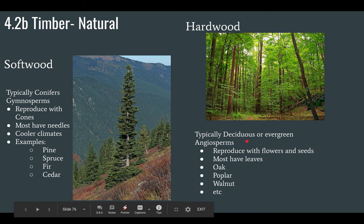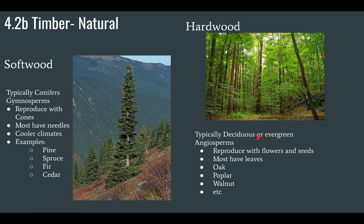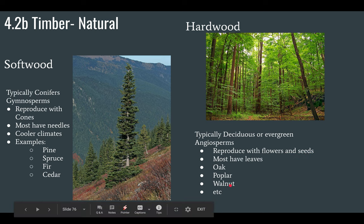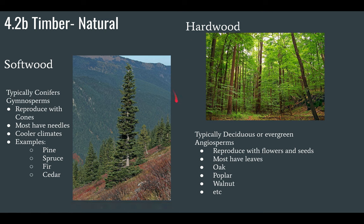Hardwoods are typically deciduous or evergreen angiosperms. Evergreen means they don't lose their leaves. Angiosperms produce fruits or have some covering around their seeds — 'gymnosperm' means naked seed, while 'angiosperm' means the seed has some sort of coating. Hardwoods reproduce with flowers and seeds, have leaves, and include trees like oak, poplar, and walnut.